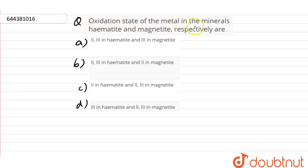Oxidation state of the metals in the minerals hematite and magnetite respectively are: a) second third in hematite and third in magnetite, b) second third in hematite and second in magnetite, c) second in hematite and second third in magnetite, d) third in hematite and second and third in magnetite.